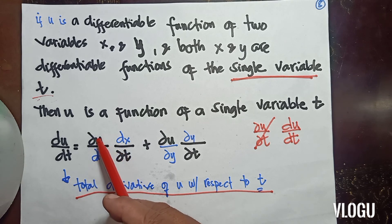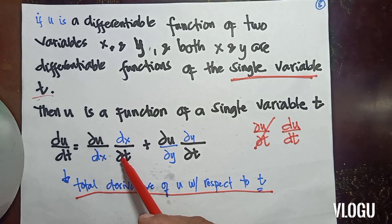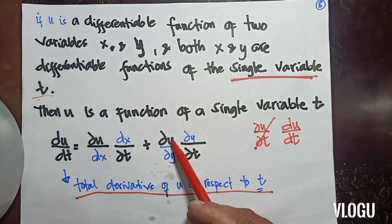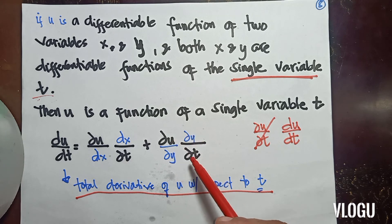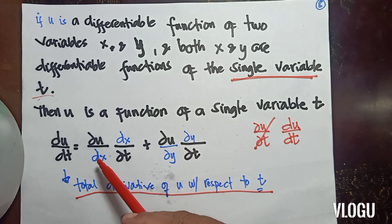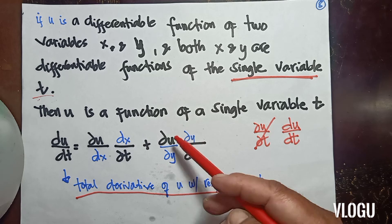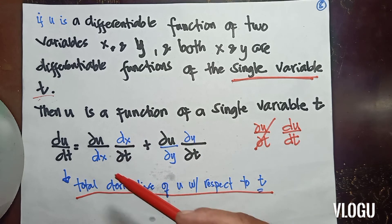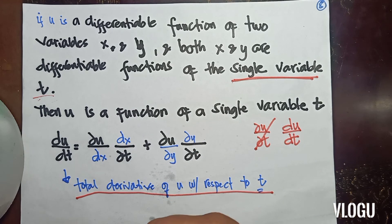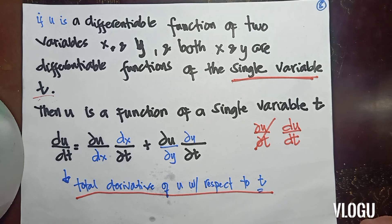So, the partial derivative of u with respect to x, times dx/dt, plus the partial derivative of u with respect to y, times dy/dt. We will have examples so that we can understand this.